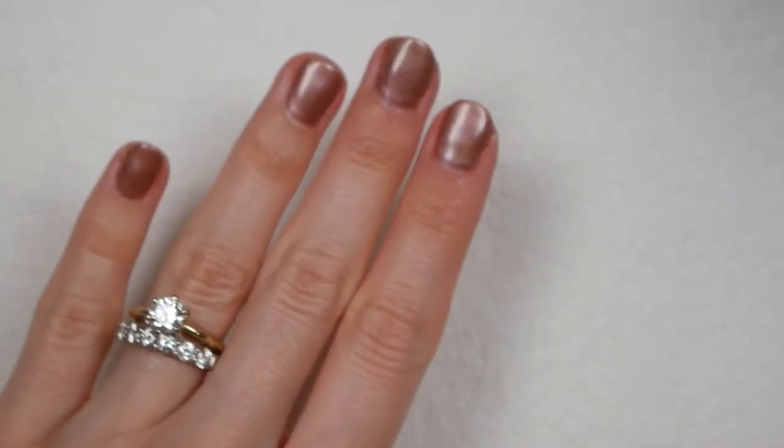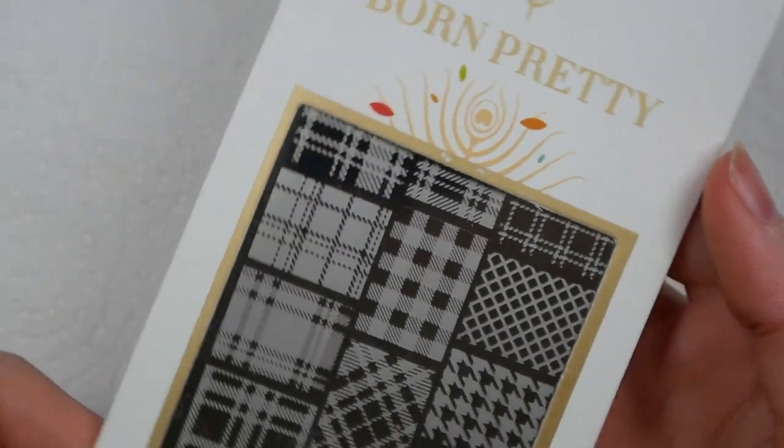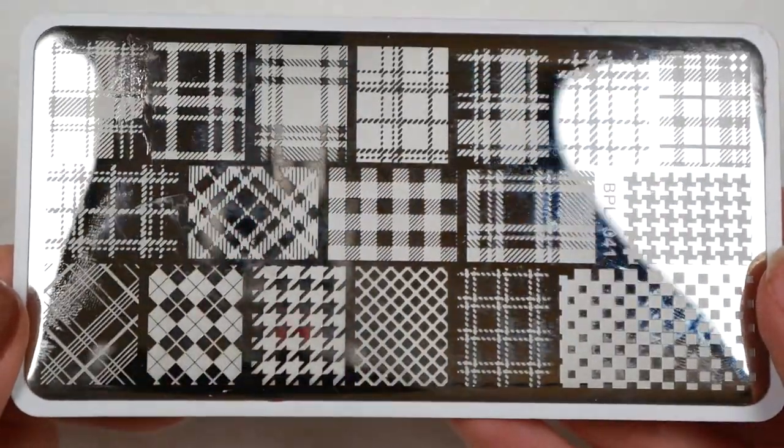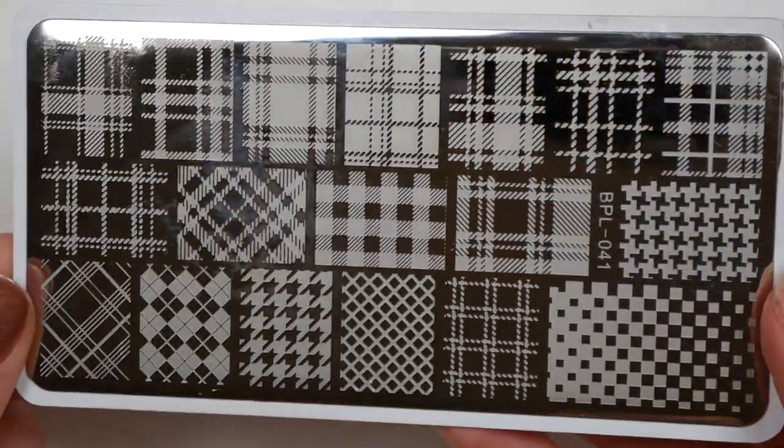There we go! Your gel polish should last about two to three weeks, so you can stop there if you want. Now for the best part. We'll be adding a stamped pattern layer using this stamping plate. I got this plaid plate from the brand Born Pretty.